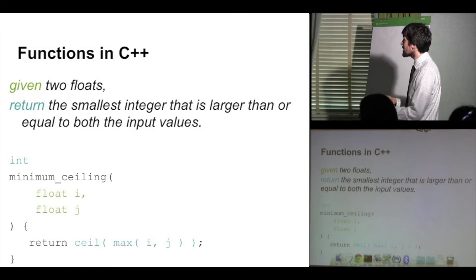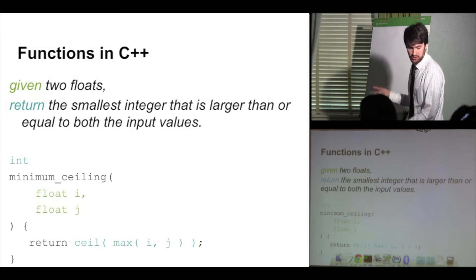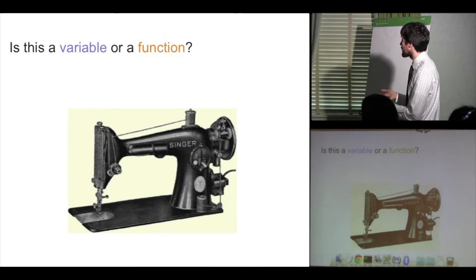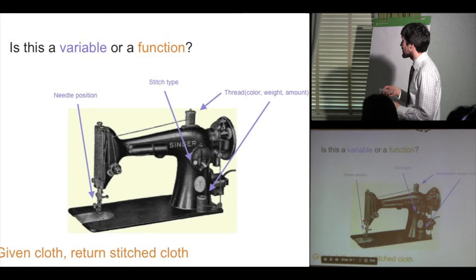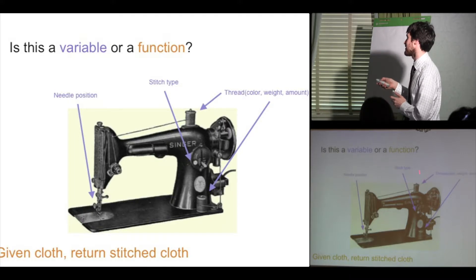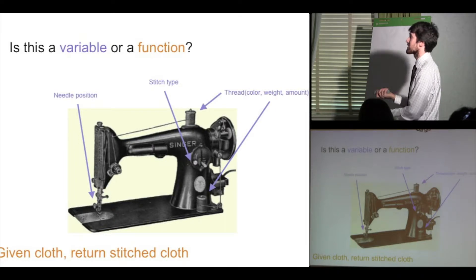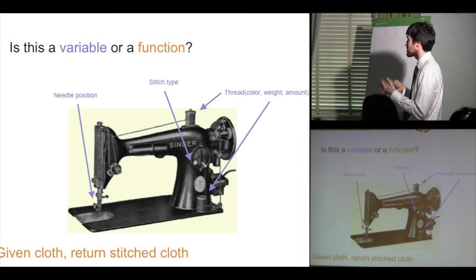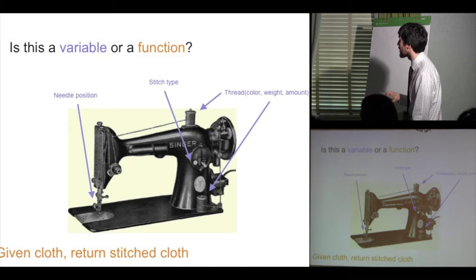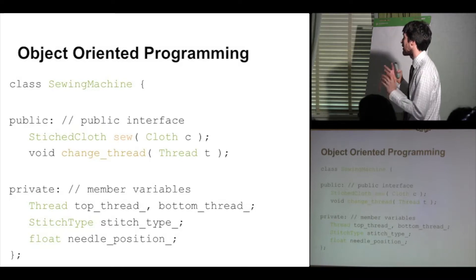If we have a sewing machine, is this a variable or a function? In some ways it's both. As far as state goes, it has a needle position, a particular stitch type, the position of the thread, what color thread it's got — all these different properties, each with a particular type and state. But it also has a function: if you give it cloth, it stitches the cloth and gives you back cloth. To model a thing like a sewing machine, one way to do this is through a class, through object-oriented programming.